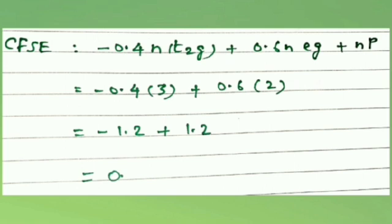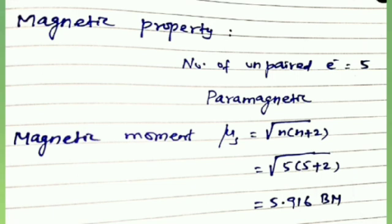Therefore, CFSE = -0.4 × n(t2g) + 0.6 × n(eg) + number of pairing. There are no paired electrons. So CFSE = -0.4 × 3 + 0.6 × 2 = -1.2 + 1.2 = 0 Δ₀. For magnetic property, we use μ = √[n(n+2)] where n is the number of unpaired electrons. So μ = √[5(5+2)] = √35 = 5.916 BM.